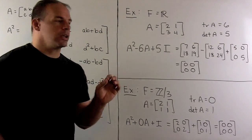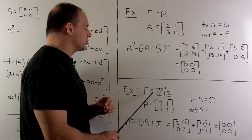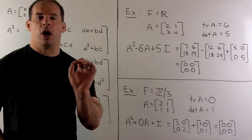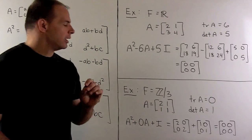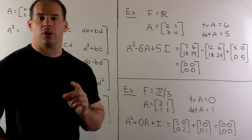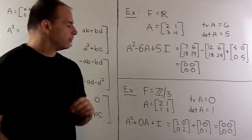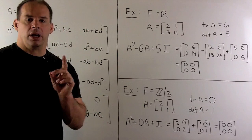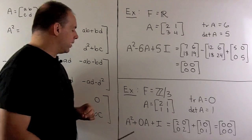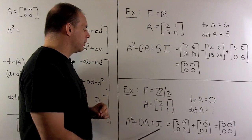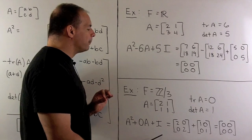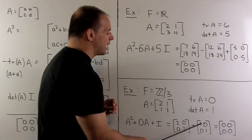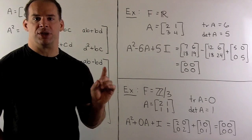If we use a different field, say I try F equal to Z mod 3. I'll use the matrix A equal to [2 1; 1 1]. Then the trace is 2 plus 1, which is equal to 0. The determinant is going to be equal to 2 minus 1, which is 1. Here, we consider the polynomial A squared plus 0A plus the identity matrix. So, when we work this out, twice the identity plus 1 times the identity gives me 3 times the identity, which gives me 0.